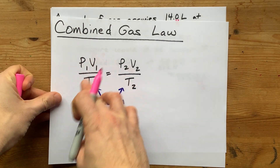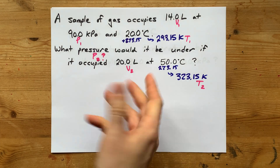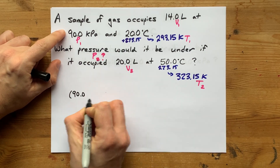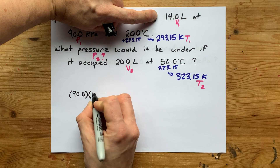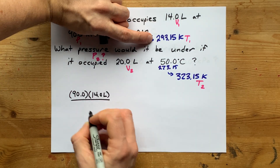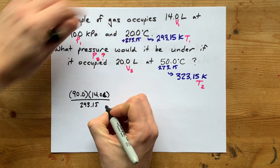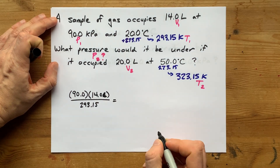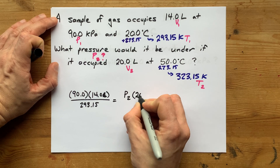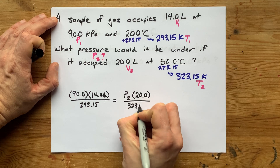We're going to plug these numbers into their corresponding places in the combined gas law formula: P1 V1 over T1 equals P2 V2 over T2. That's P1 = 90 kilopascals, times V1 = 14 liters, divided by T1 = 293.15 Kelvin, equals P2 (unknown) times V2 = 20, divided by T2 = 323.15.